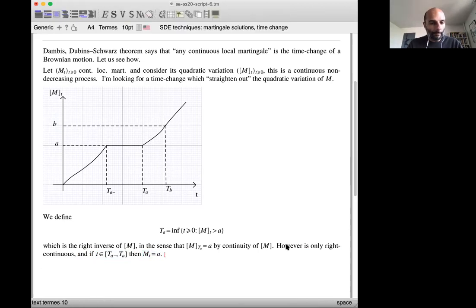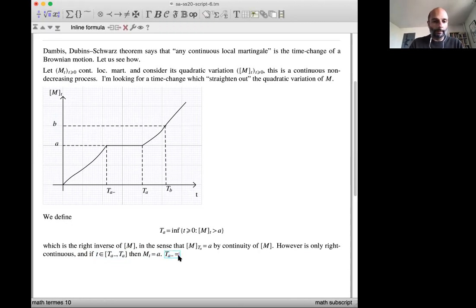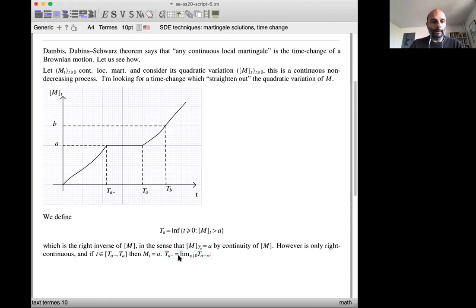Then M of T is A. So you can have interval of constants and then you can have this situation. Here, let me remind that T of A minus is like the limit when T converge from below to, sorry, when B converge from below to A. It's the limit epsilon tending to zero of T of A minus epsilon.